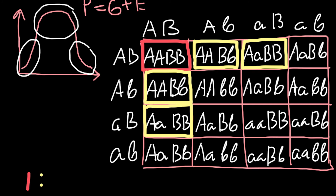Now let's search for how many genotypes have three dominant alleles and one recessive allele. Counting through the table, we find four such genotypes — so this is the '4' in our ratio. Since genotype equals phenotype for an additive trait, these plants have three dominant alleles giving 40 plus 30, so they are 70 centimeters tall.